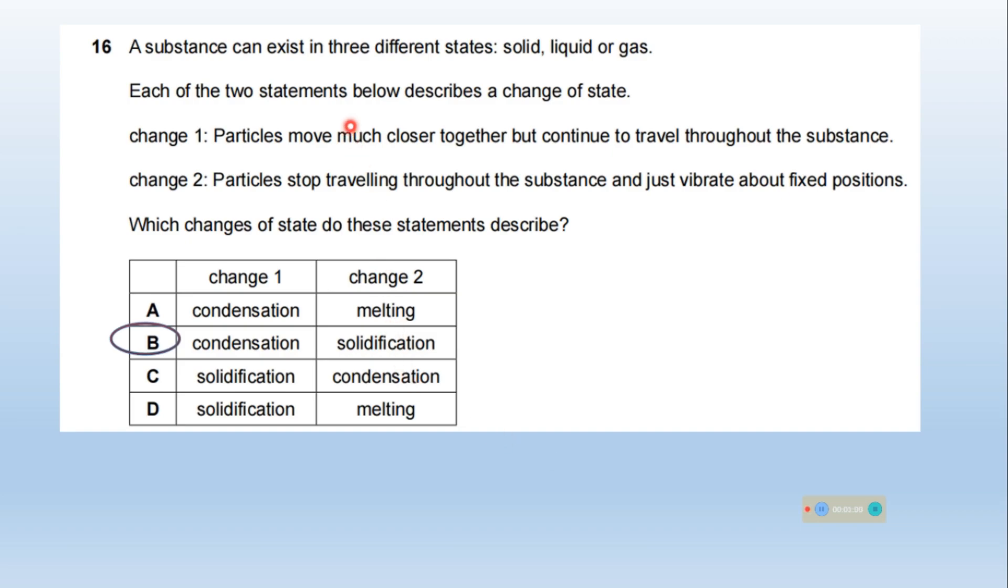A substance can exist in three different states: solid, liquid or gas. Each of the two statements below describes a change of state. Change 1: Particles move much closer together but continue to travel throughout the substance. This is condensation because when the water vapor condenses, it becomes liquid. And in liquid, particles are in close contact and they are able to travel throughout the substance. So this process is condensation.